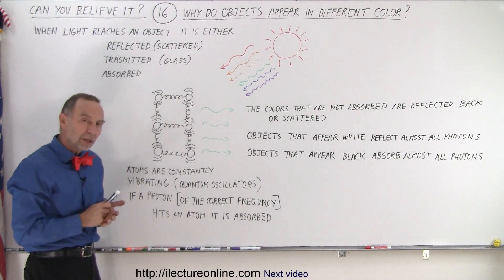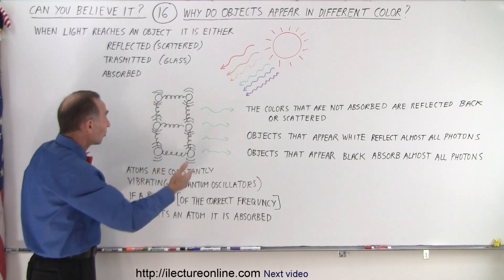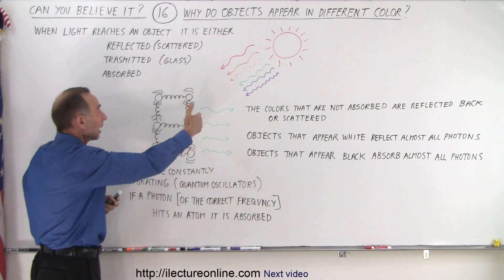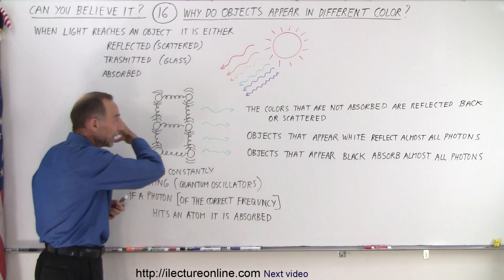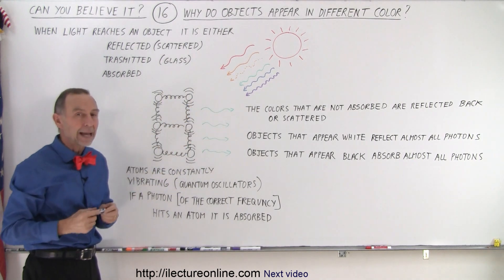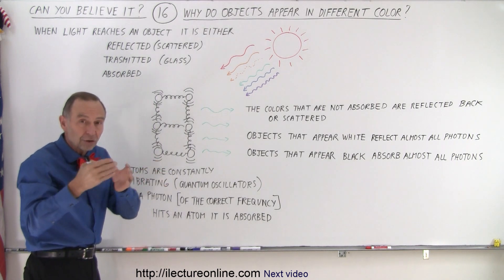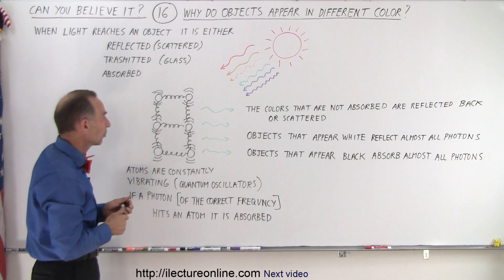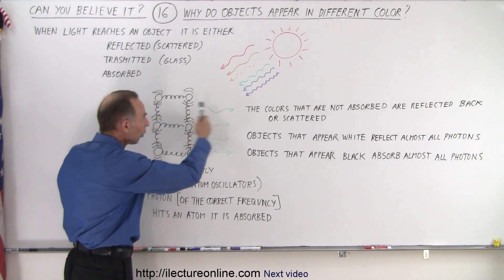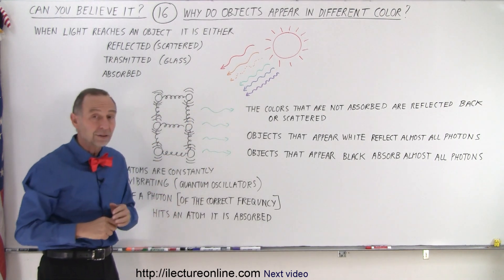But, if they don't absorb all the light, then what will happen is the light that does not get absorbed and the light that doesn't get transmitted will then get reflected or scattered back. And sometimes it's a singular color or a combination of colors that look like a particular color when they're combined. So, let's say that in this example, only the green photons are reflected. Well, that object will then look green.